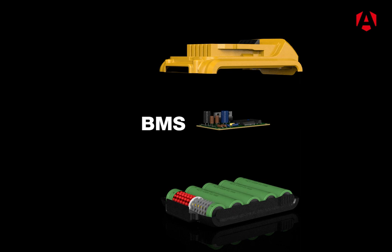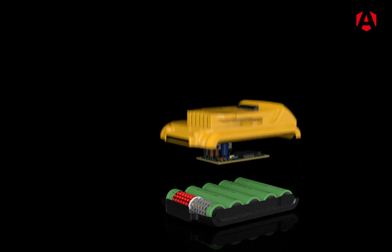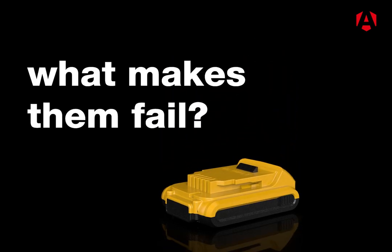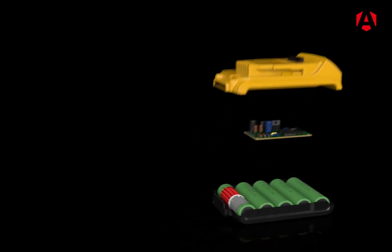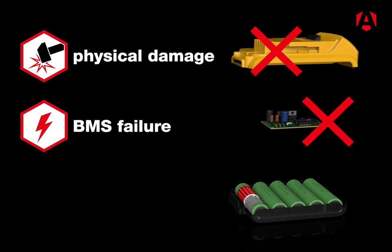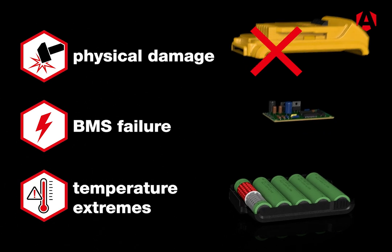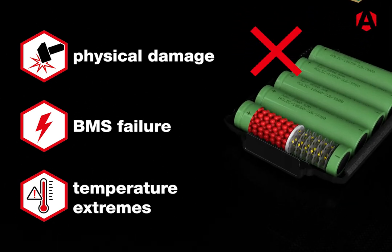So why do Li-ion batteries fail? The main causes are physical damage, a failed BMS, and temperature extremes, which can all damage the plastic membrane between the lithium and the graphite.